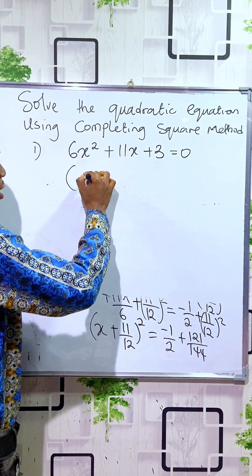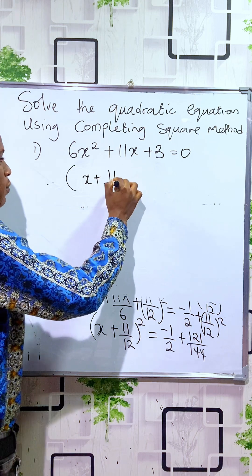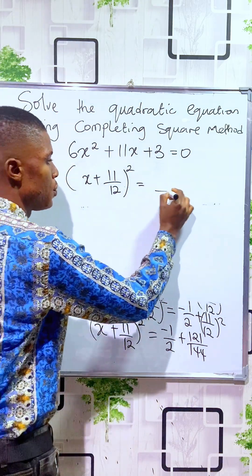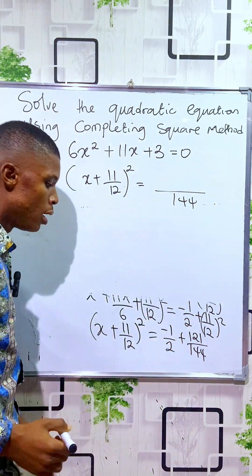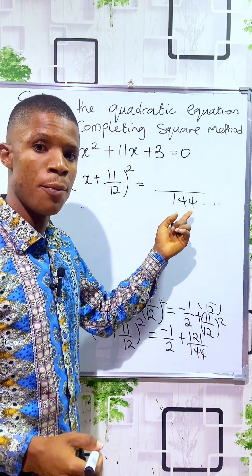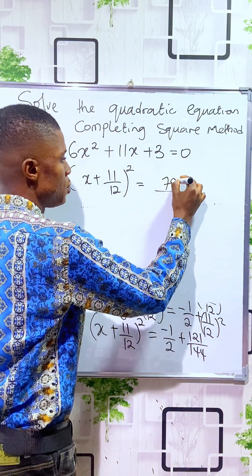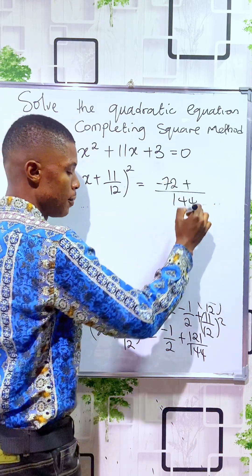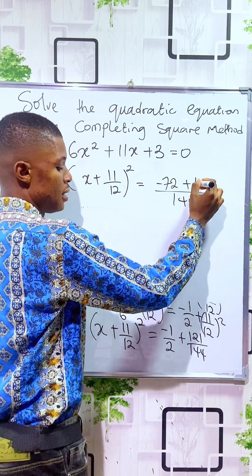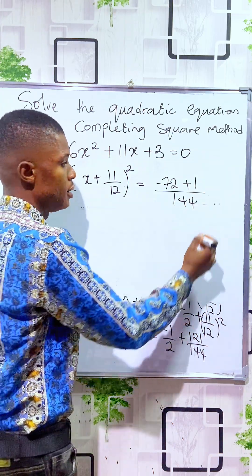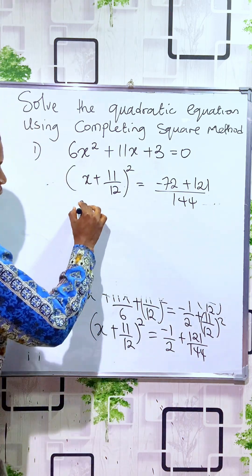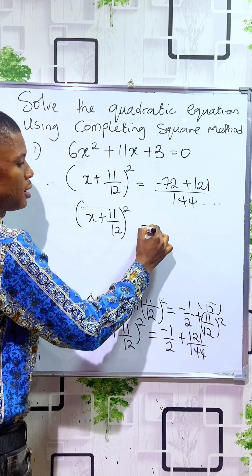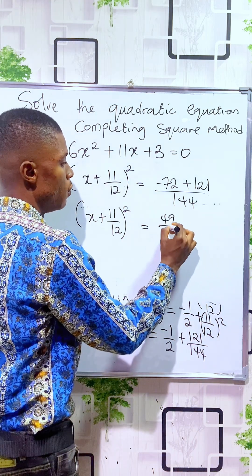At this stage, we have (x + 11/12)² equals, with a common denominator of 144. When 2 divides 144, you get 72, and since it multiplies minus 1, it becomes minus 72. Then 144 divides itself to give 1, and 1 times 121 is 121. So you have (x + 11/12)² equals 49/144.